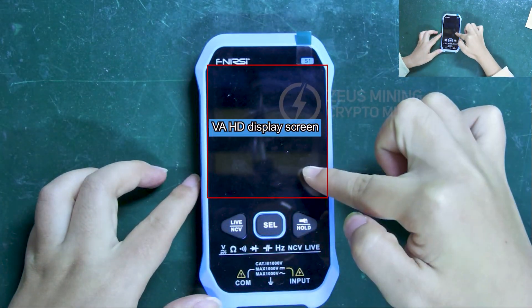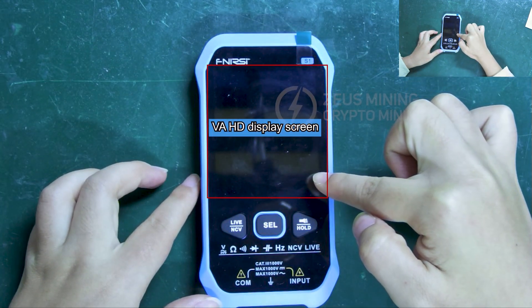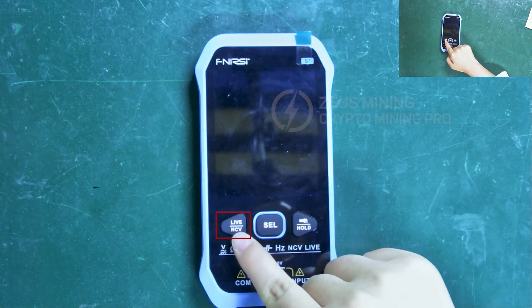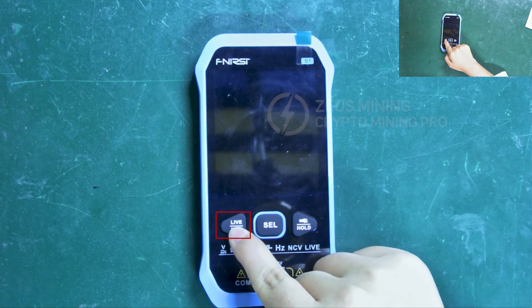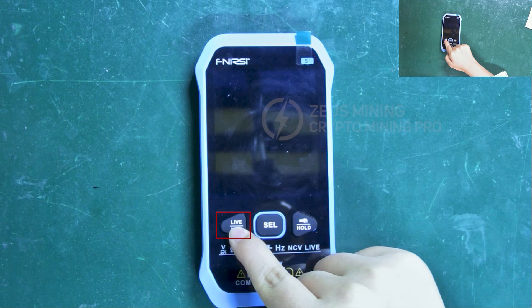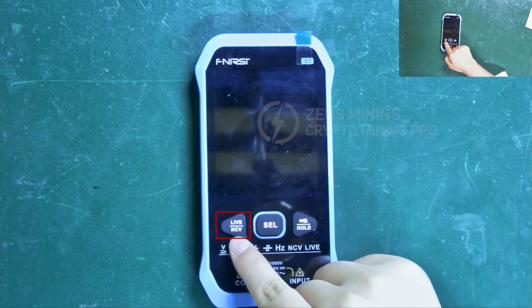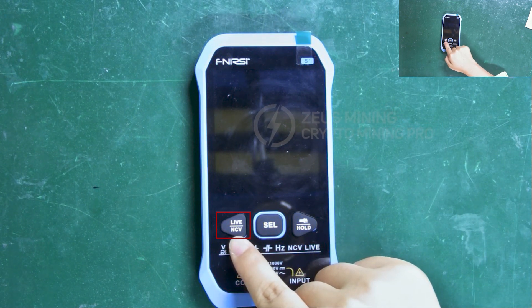This is a super large VA HD display screen. The button on the left has two functions: LIVE can be used to determine the live wire and the neutral wire, and NCV is the voltage detection function.